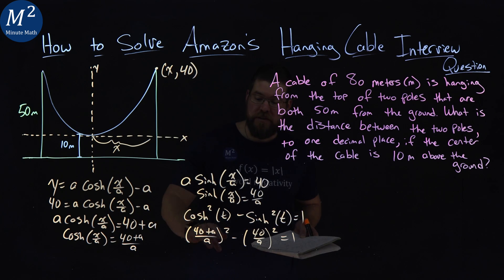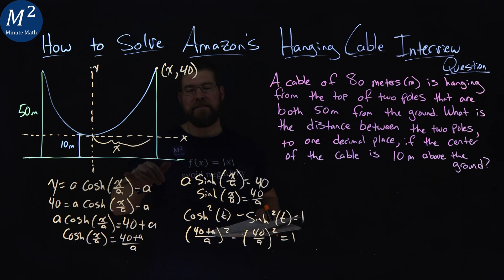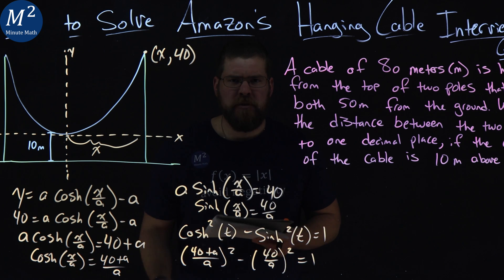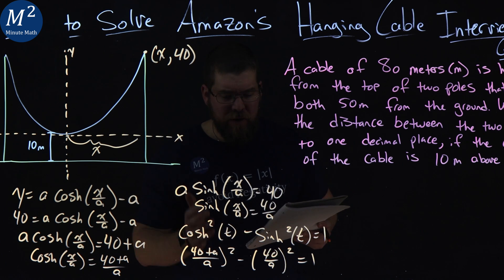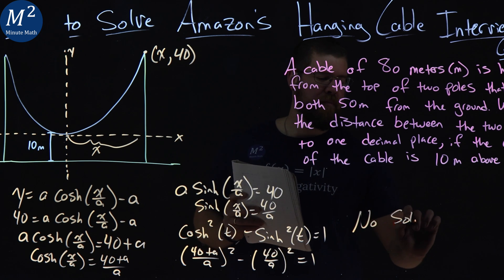And so now what we're going to do is we're going to solve for a here, and we can use that to plug it back in to get the length of x, and we can solve this problem. But there's an issue here. Do you know what the issue is? We cannot actually solve for a. There's no solution for a.